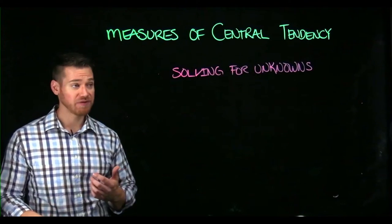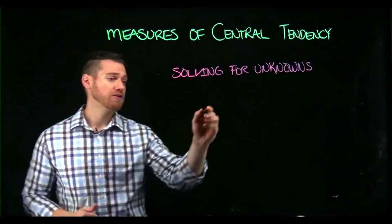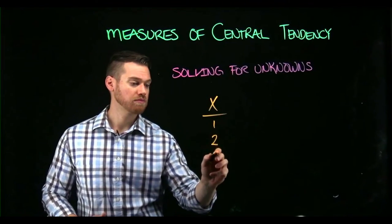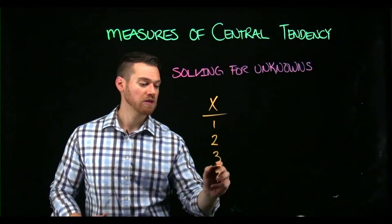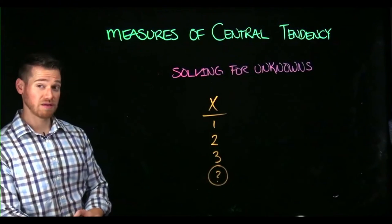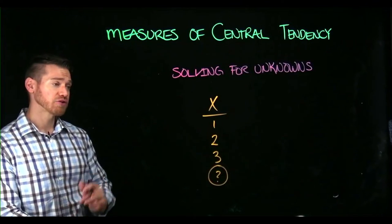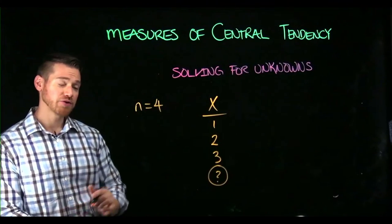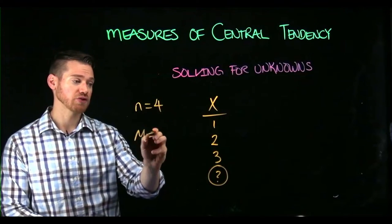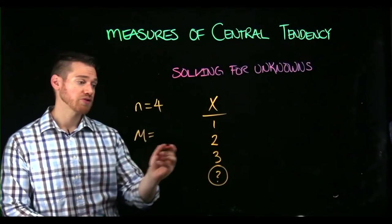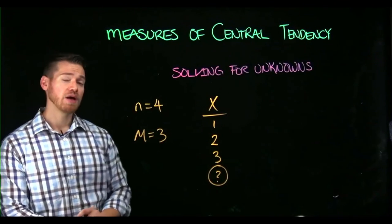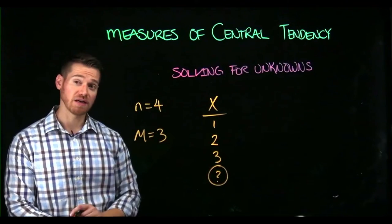Imagine you were given a problem where you have a set of scores and you have one score that is unknown. You're told that you have four scores and you're told what the mean of the scores are. Say that the mean of the scores here is three and you need to find this unknown value.